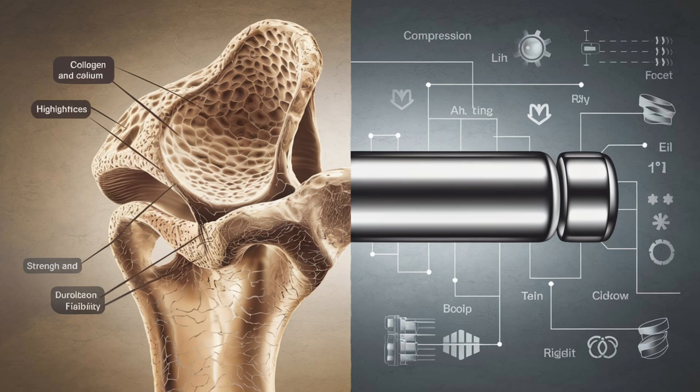Bone, on the other hand, is made up of collagen fibers and calcium phosphate, creating a material that's both flexible and strong.